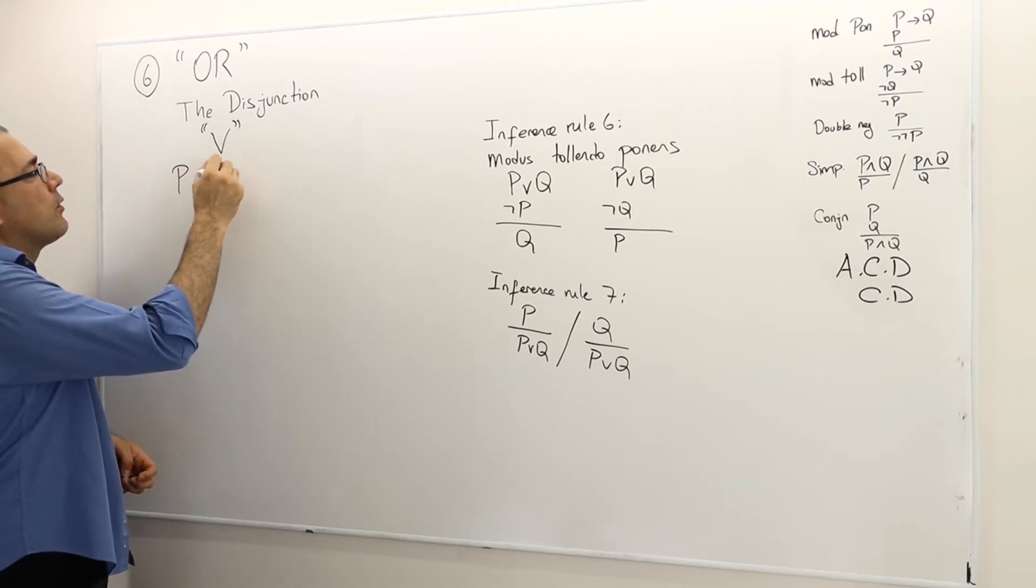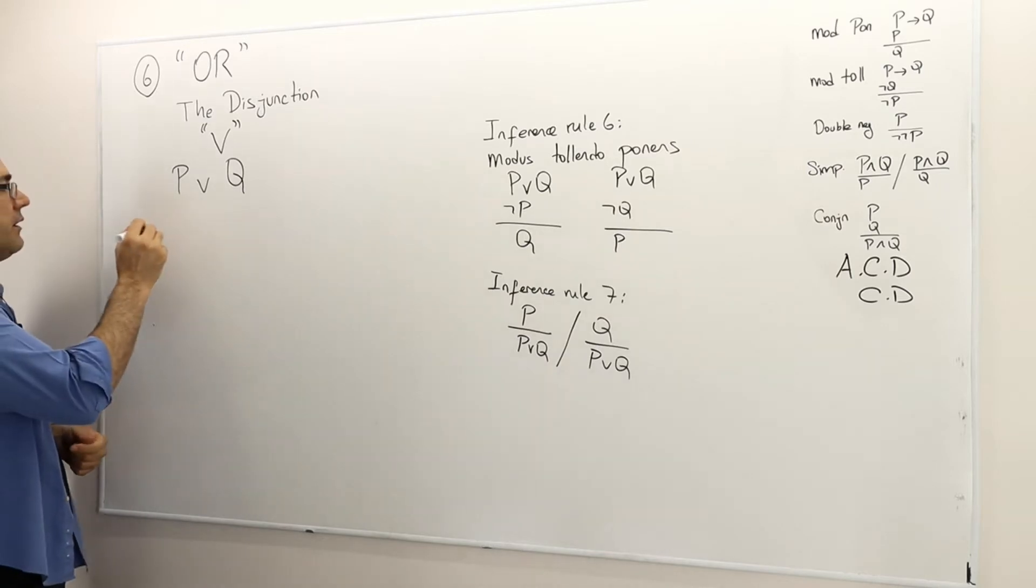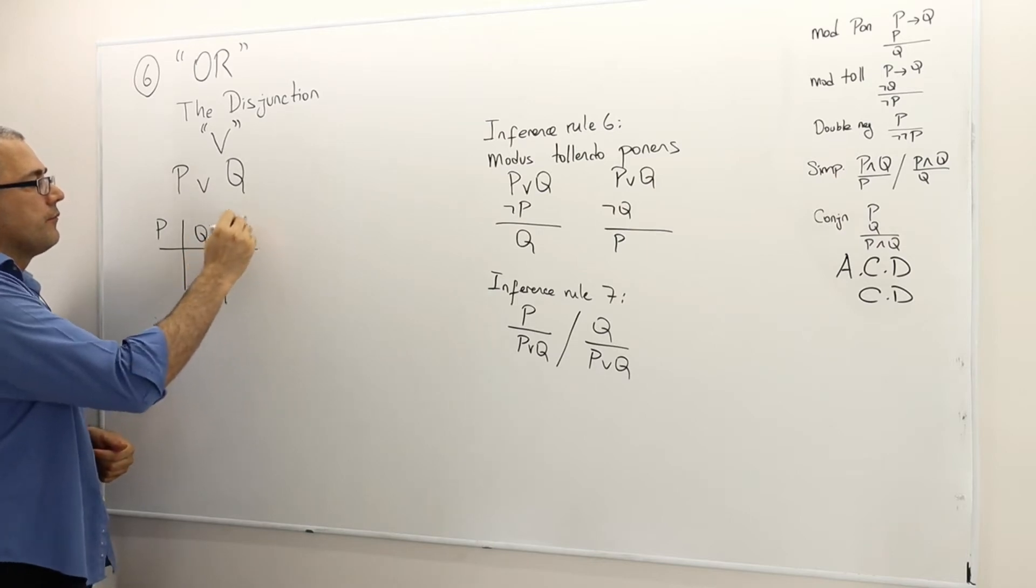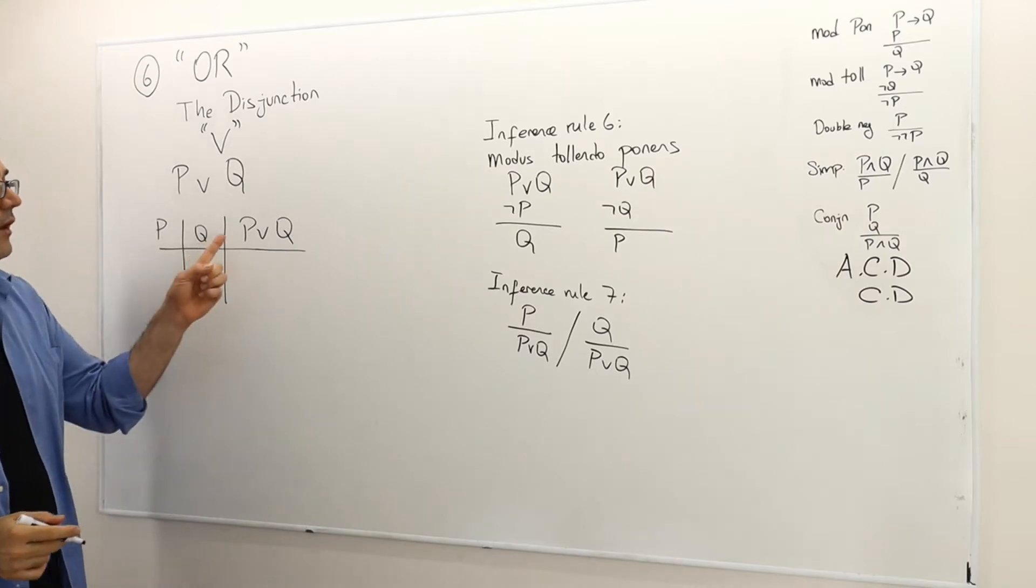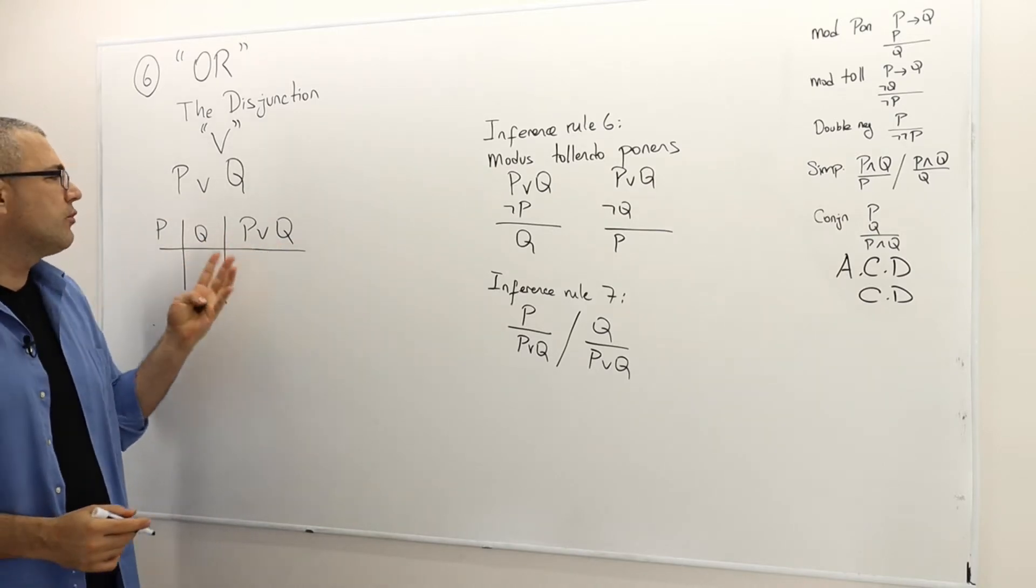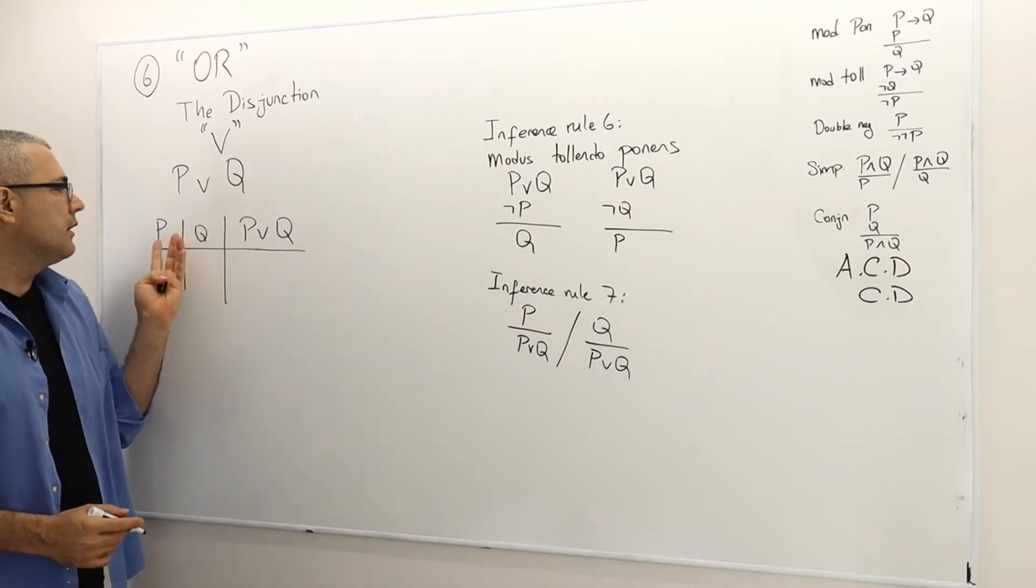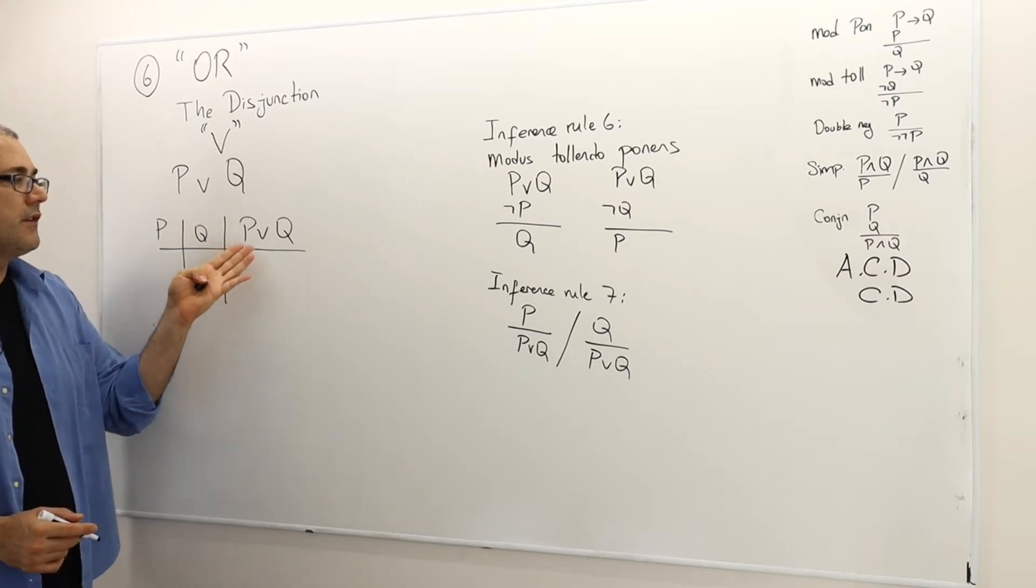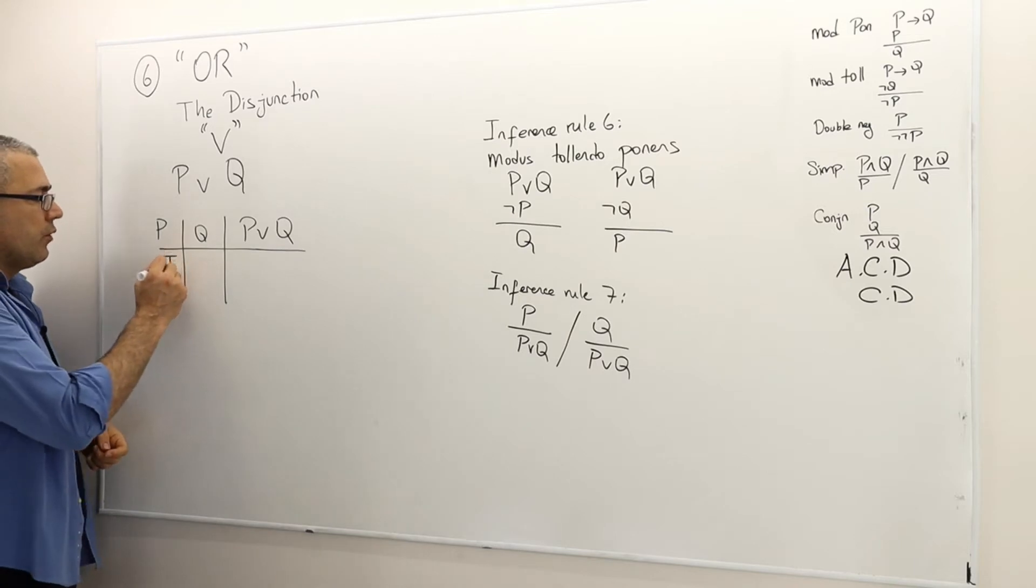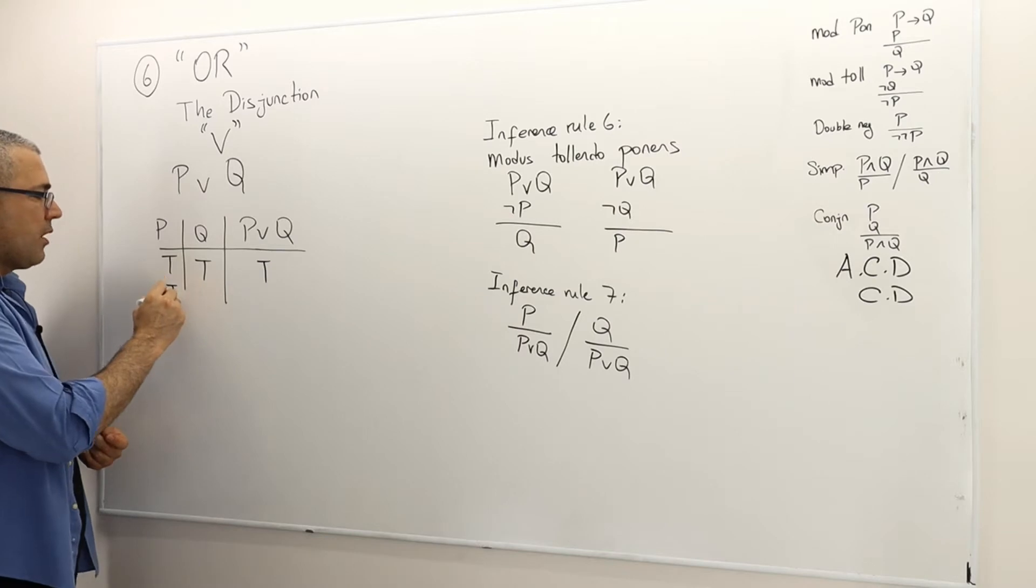For example, when you say P or Q, we can easily write the truth table of this statement P or Q. So for P or Q to be true, we don't really need both P and Q to be true. Either P or Q can be true. In these cases, P or Q is going to be true. When P and Q are both true, then P or Q is also true. When one of them is true but the other one is false, regardless, P or Q is going to be true.